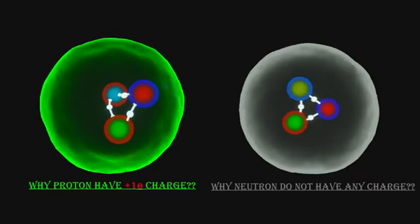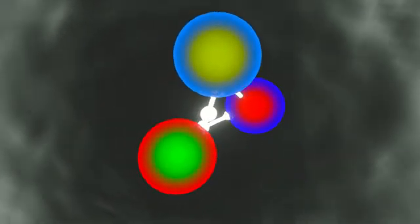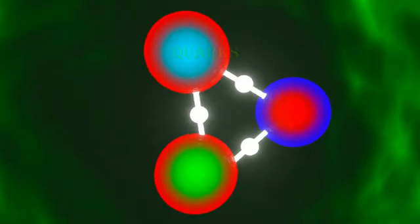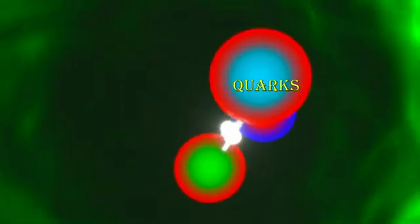Protons and neutrons are made up of particles that are the basic constituents of all matter: elementary particles called quarks. There are six types known as flavors: up, down, charm, strange, top, and bottom.